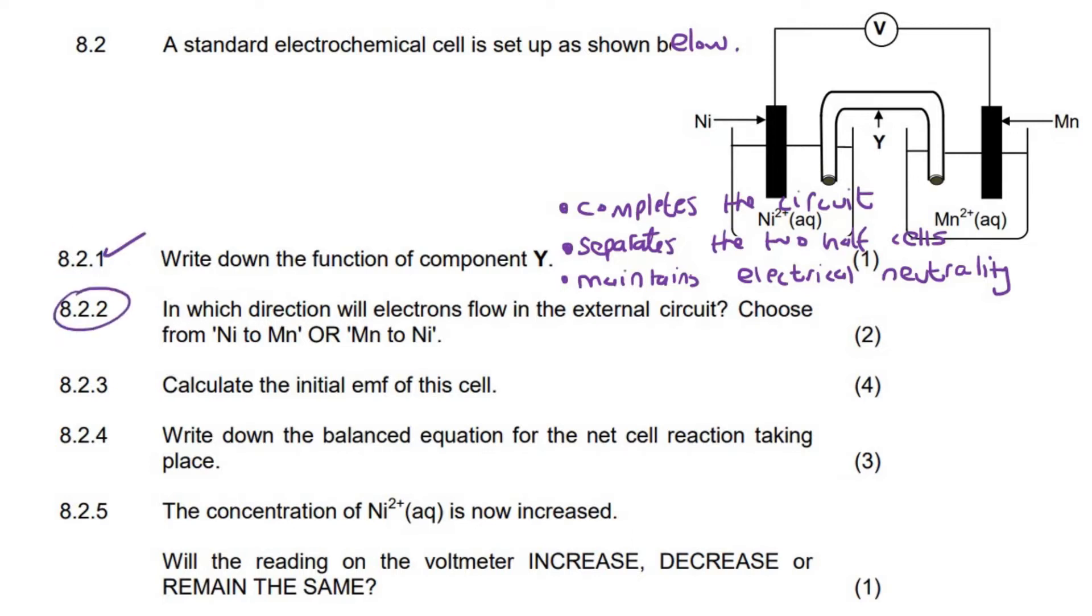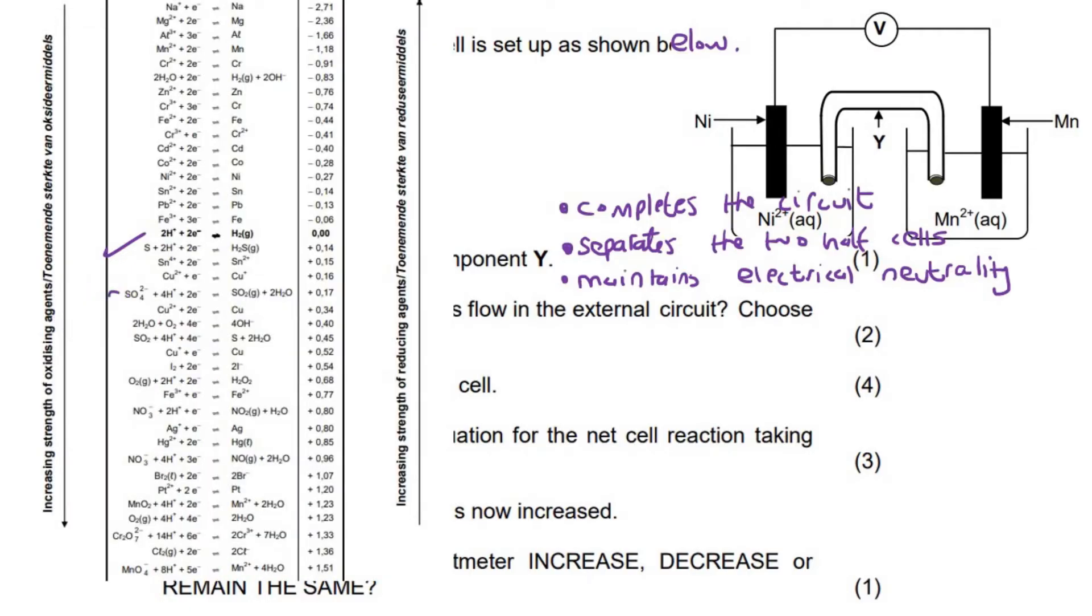This one says, in which direction will electrons flow in the external circuit? Choose from Ni to Mn or Mn to Ni. Okay, so we've got to try to figure out which way it's going to go. So we need to go look at our table. Okay, so step one, go find the two reactions on your table. So the Ni reaction is over here. And then the Mn, where are you? Mn there.